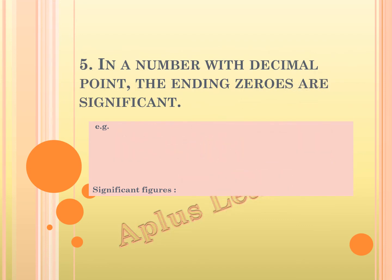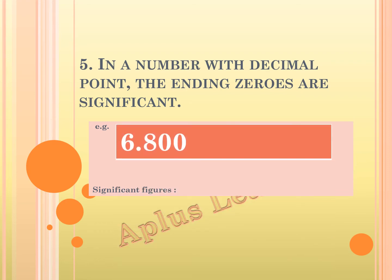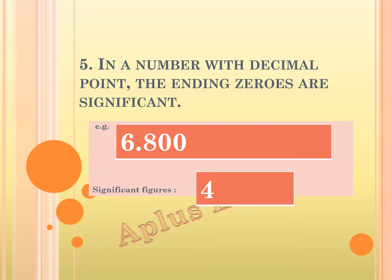The next rule: in a number with a decimal point, the ending zeros are significant. Here, we have the example 6.800. The zeros after the decimal point are significant, so they have to be counted. Here we have the significant figure as 4.